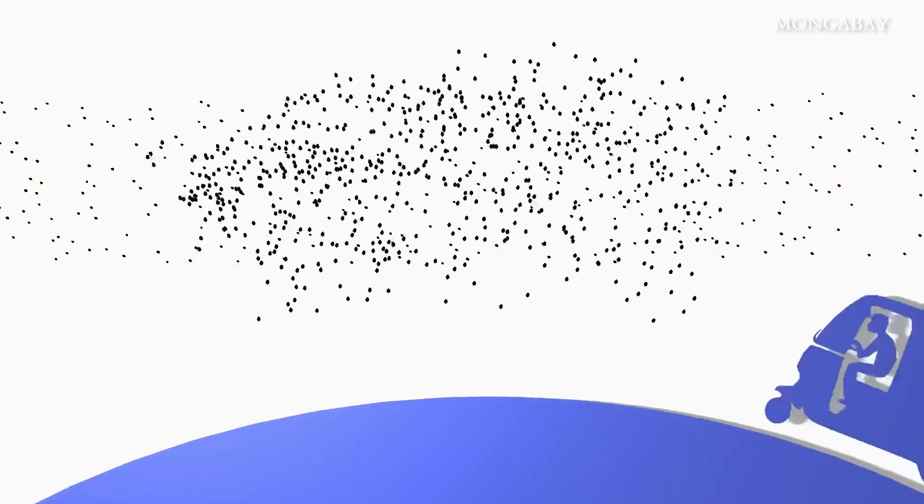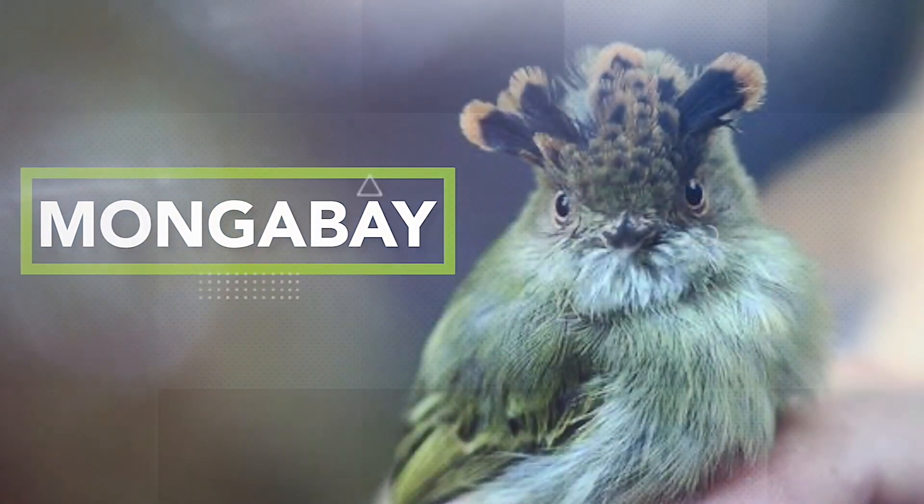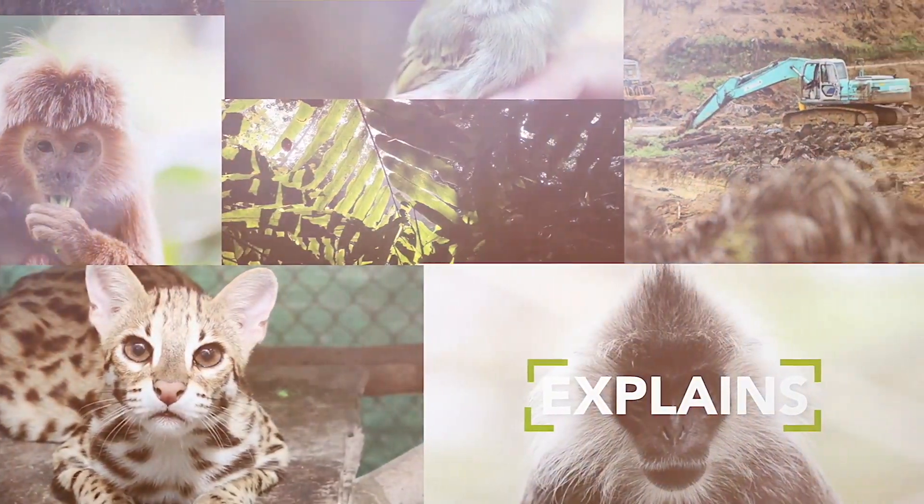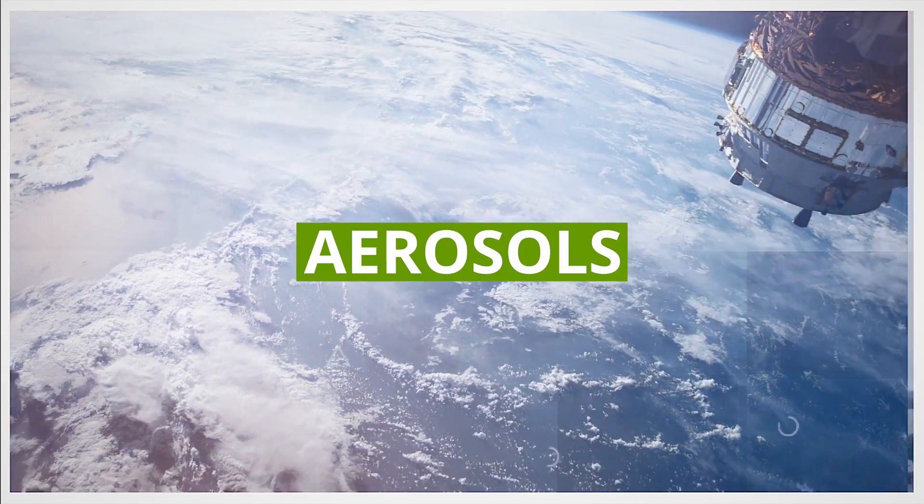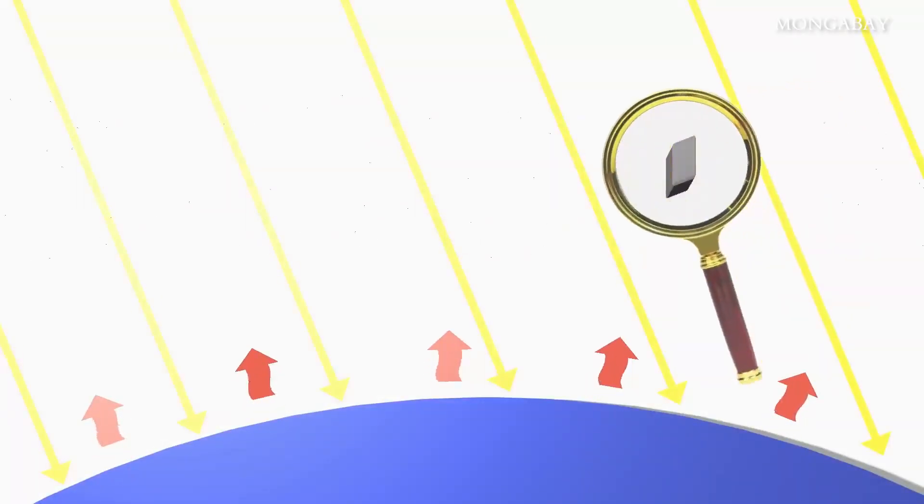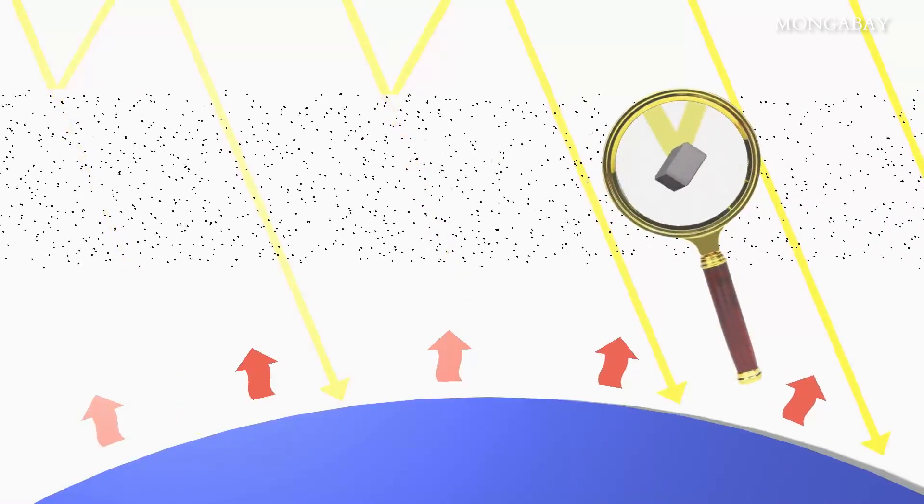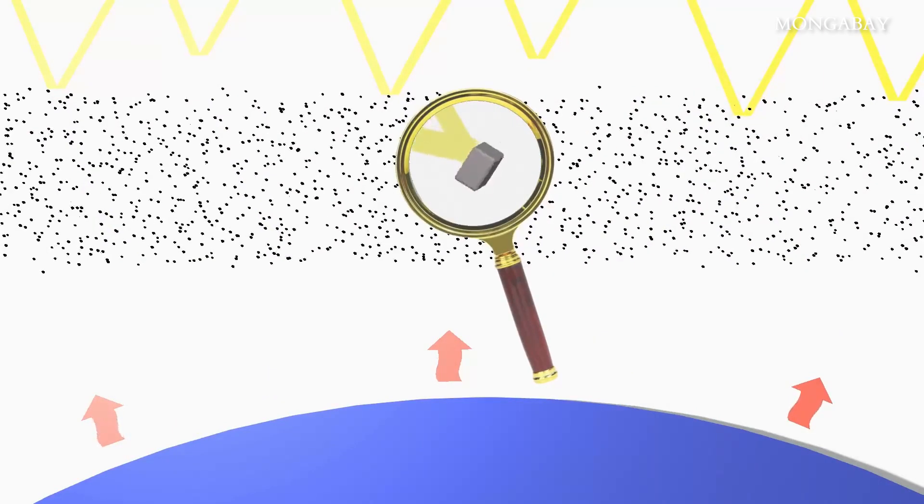So how are aerosols changing our world? Most aerosols act to cool the climate because particle surfaces are at least partially reflective. When incoming solar radiation passes through an accumulation of aerosols, some of that radiation is scattered back into space, reducing the amount of energy warming the earth.